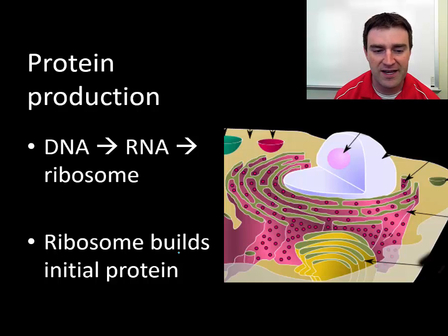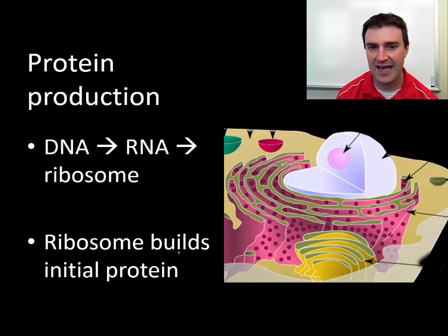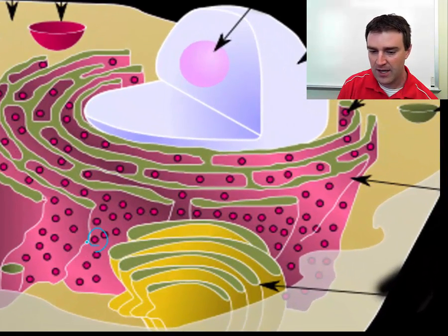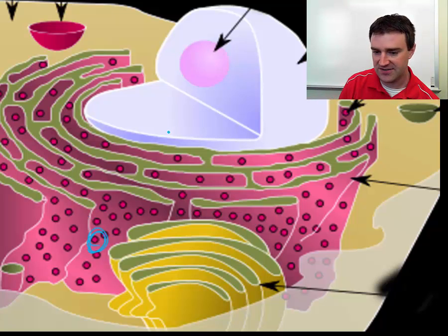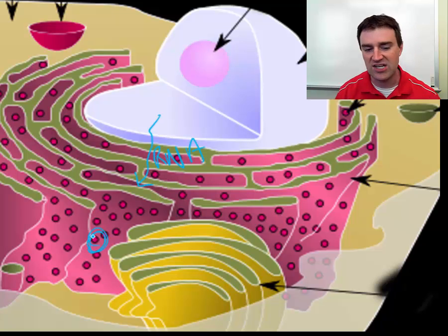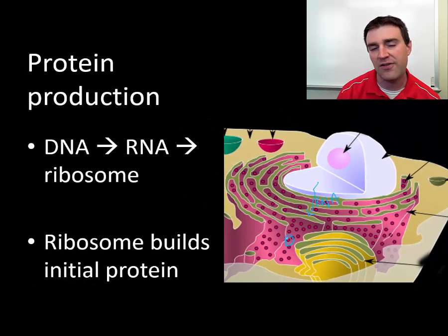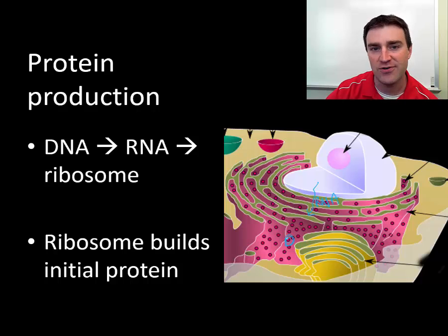For protein production, the DNA is the master code for proteins. RNA makes a copy of the master code, and the ribosome structure — those little dots right here — reads the RNA code that comes out of the nucleus. The ribosomes read that RNA and initially build the protein. In eukaryotic cells, since the cell is more complicated, there might be other organelles that do additional things to the protein after the ribosome builds it.